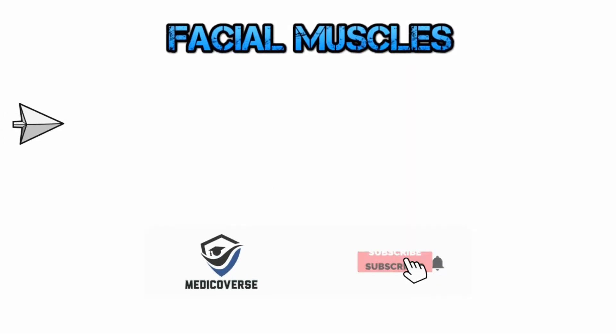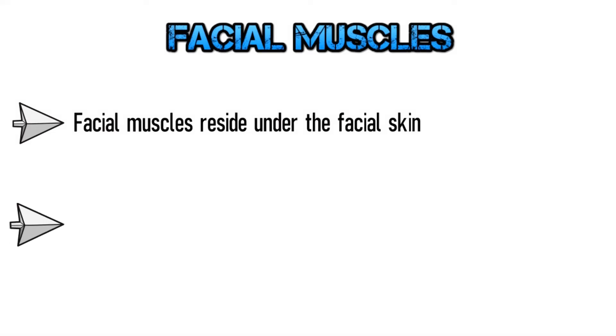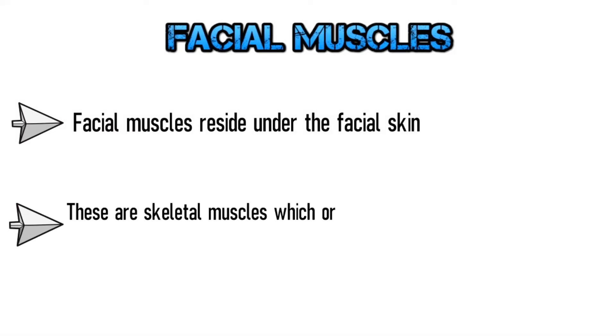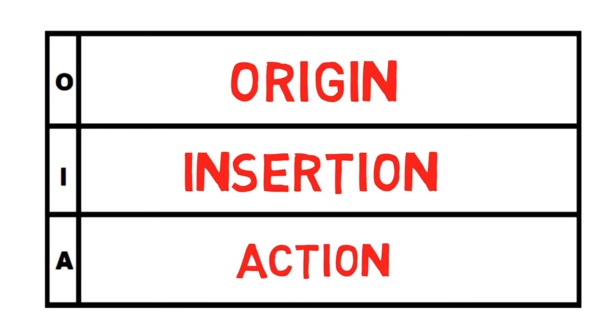The facial muscles reside under the facial skin and these are the skeletal muscles which originate from the skull and the fibrous structures. Before starting the description of the muscles, let me tell you how we will study them. This is a table that consists of columns for origin, insertion, and action of the muscle, and by studying the muscles like this it will be easier to remember them.